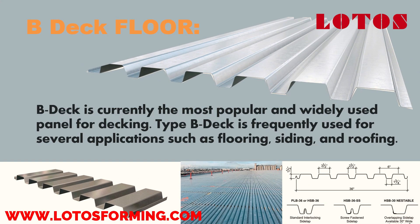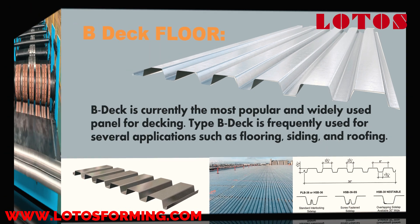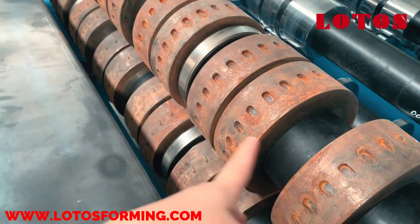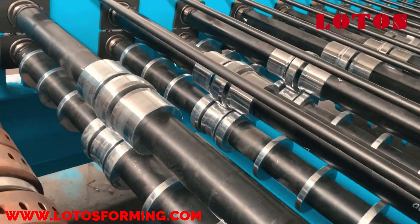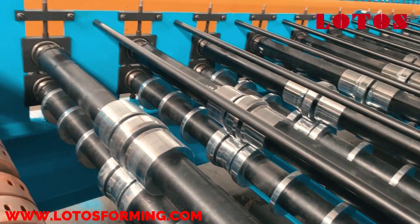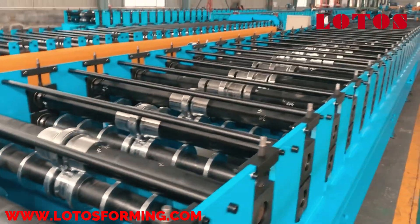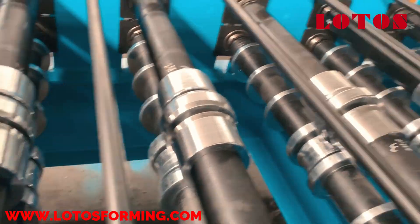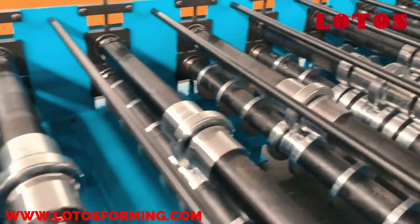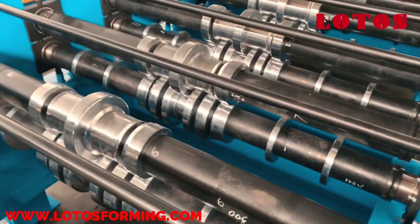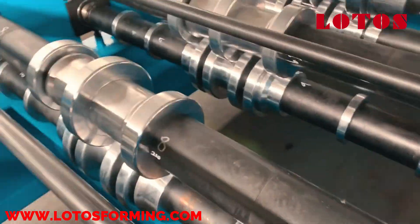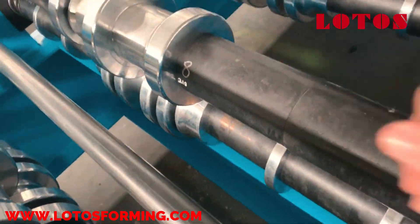First one is B roof deck. B deck is currently the most popular and widely used panel for decking. Type B deck is frequently used for several applications such as flooring, siding, and roofing. Type B deck is the most common structural metal decking in the industry. It is an ideal structural substrate in short to medium span conditions that range from 3 feet to 10 feet in distance.